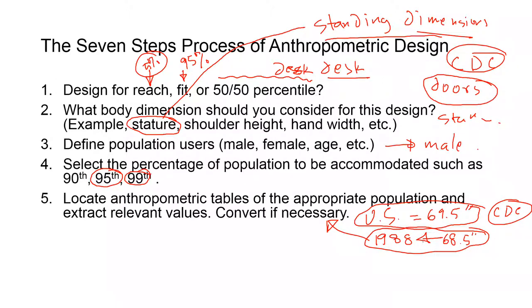The process of anthropometric design - once you figure out what's the percentile, then you try to extract the value from the table for that particular percentile. If it's not available, I'll show you another video on how to convert the percentile to something that you want.